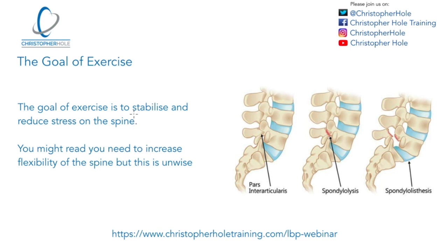The goal of exercise is to first stabilise the spine, and then what will start to happen is to reduce stress on the spine. We aren't necessarily going to talk about specific exercises here, but the type of direction you want to go in. There is a difference between the therapeutic side of stabilising the spine and fitness exercise — what a lot of people do in rehabilitation is use fitness techniques in the rehab realm, and the two don't necessarily match.